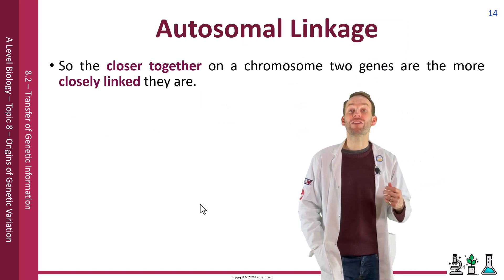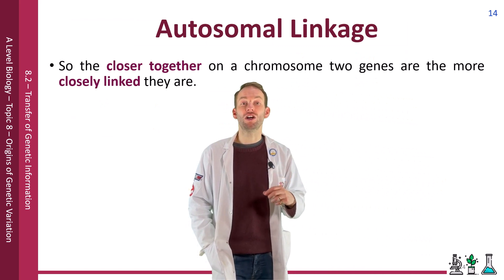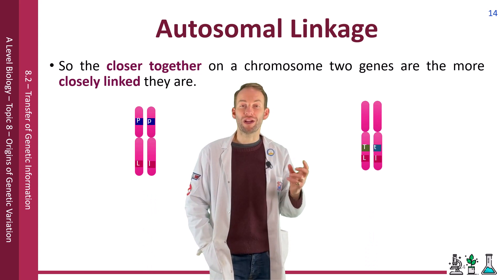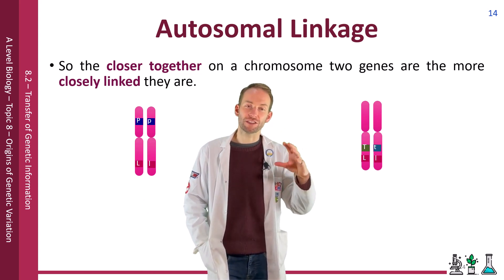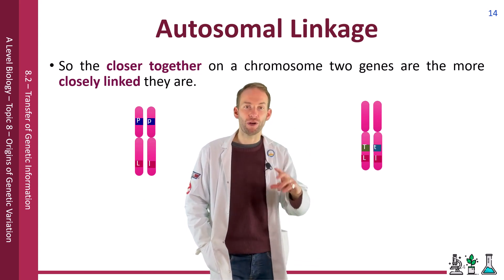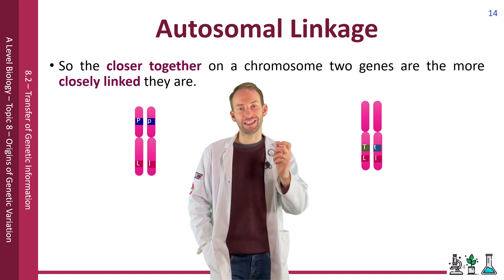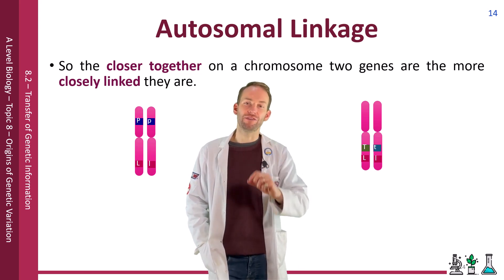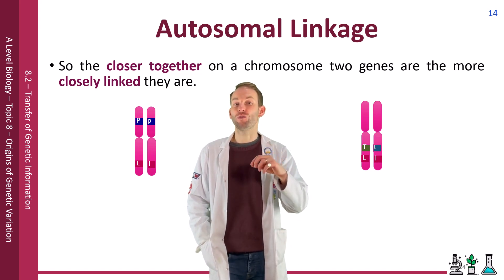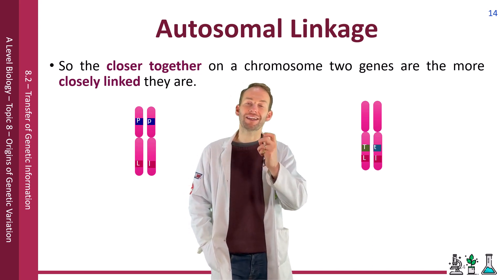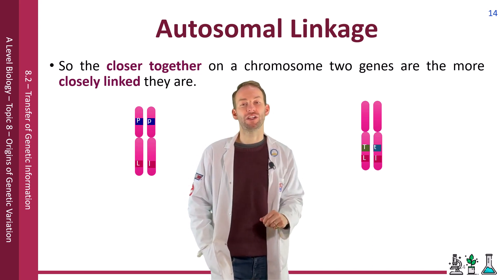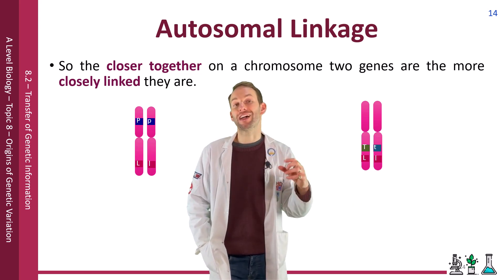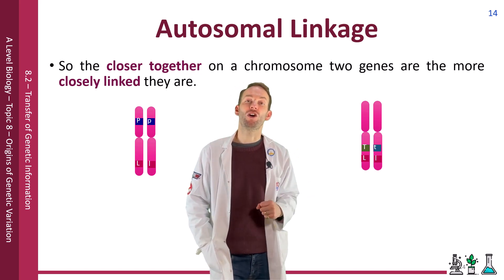The closer together two genes are on a chromosome, the more closely linked they are, because they are less likely to split when crossing over occurs. If genes are far apart, crossing over anywhere between them causes recombination. But if genes are very close — only a few map units apart — they're less likely to be split up. Therefore, by looking at the number of recombinants in autosomal linkage, we can get an idea of how close genes are on chromosomes.